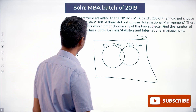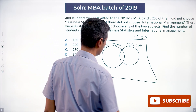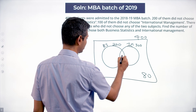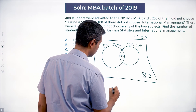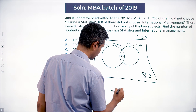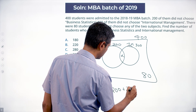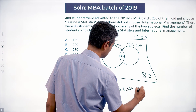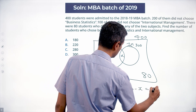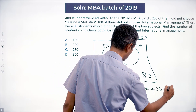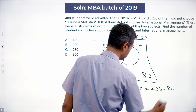80 did not choose either of the two subjects — that's 80 outside both circles. The intersection is labeled x. So the equation becomes: 200 plus 300 minus x equals 400 minus 80.